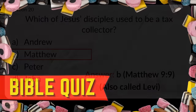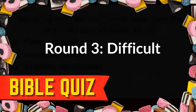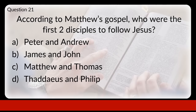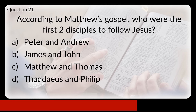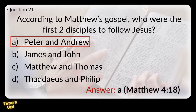Round three. Here are ten difficult questions. Question twenty-one: according to Matthew's Gospel, who were the first two disciples to follow Jesus? Was that Peter and Andrew, James and John, Matthew and Thomas, or Thaddeus and Philip? The answer is A, Peter and Andrew.